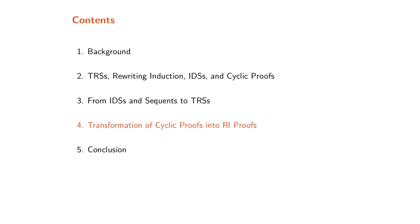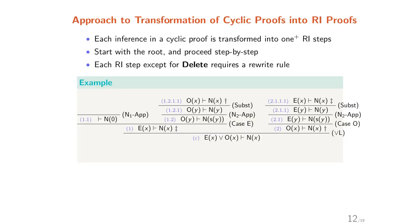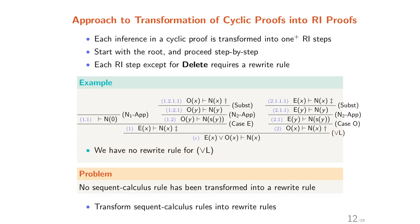Finally, I'd like to introduce the transformation of cyclic proofs into rewrite induction proofs. We follow these principles: each inference in the cyclic proof is transformed into one or more RI steps, and we start with the root and proceed step by step. Each RI step except delete requires a rewrite rule. However, we have a problem: for example, we have the sequent calculus rule ORL, but no rewrite rule for ORL yet exists. So no sequent calculus rule has been transformed into a rewrite rule.